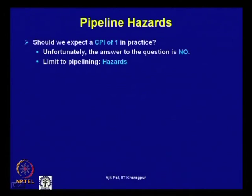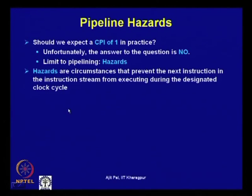CPI equal to 1 is the ideal situation, achieved when ideal conditions are met. The first ideal condition was that instructions are independent and can be executed independently of each other. Unfortunately, instructions cannot be fully independent, so we cannot really get a CPI of 1. That limit is imposed by hazards — circumstances that prevent the next instruction in the instruction stream from executing during its designated clock cycle.